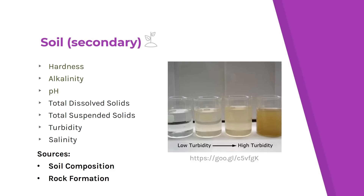The second contaminant category comes from soil. These include hardness, alkalinity, pH, total dissolved solids, total suspended solids, turbidity, and salinity. The sources for these come mainly from soil composition and rock formation.